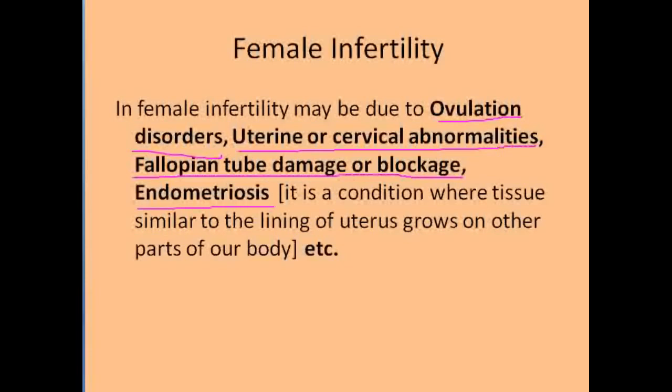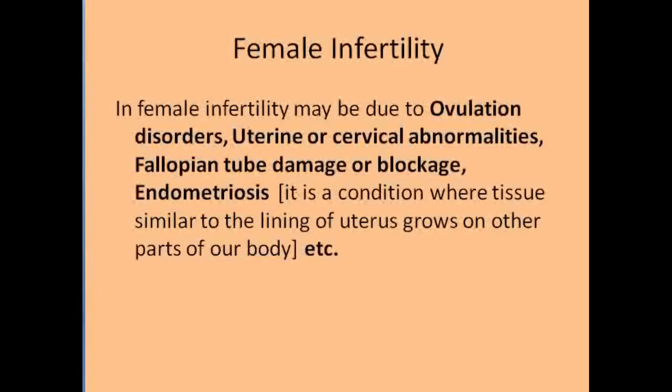What is the meaning of endometriosis? It is a condition where tissue similar to the lining of the uterus grows on other parts of our body. That we call endometriosis. Because of all these problems, the female may have infertility.